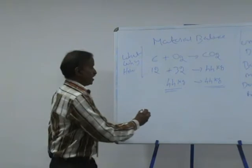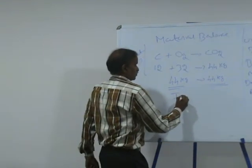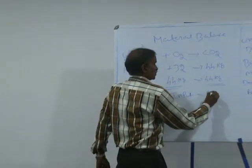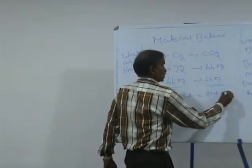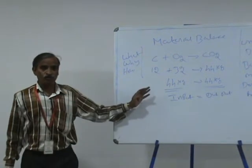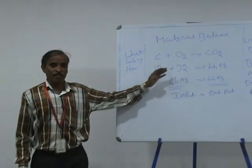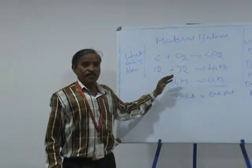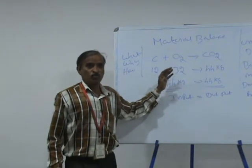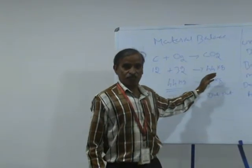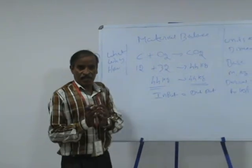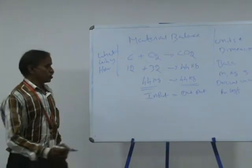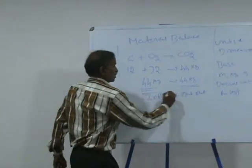Here, 44 kg is entering the system and 44 kg is leaving the system. This is called input. What are the inputs given to the system? This leaving is the output. Input is equal to output. So this is called material balance. Material balance will tell you how much quantity of material is entering the system and how much quantity of material is leaving the system. We write this material balance to know what is the actual quantity of raw material we have to handle. So here, input is equal to output.